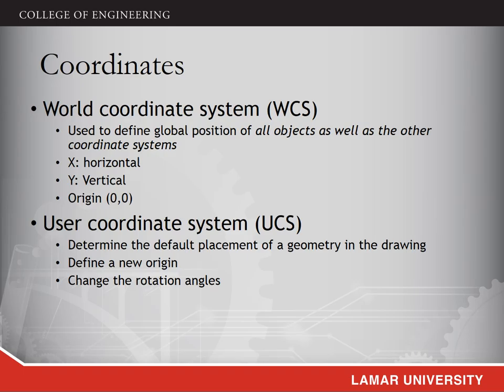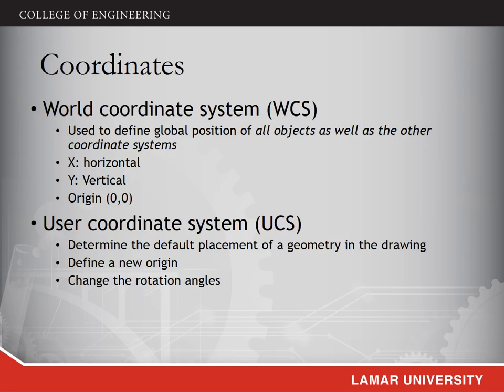Besides the world coordinate system, we can also define our own coordinate systems — this is the user coordinate system. The user coordinate system can determine the default placement of a geometry in the drawing, meaning we can identify any point in the drawing as the origin. Also, we can change the rotation angle to revise the directions of x and y-axis. The user coordinate system is very helpful for simplifying complex designs with irregular angles and locations.